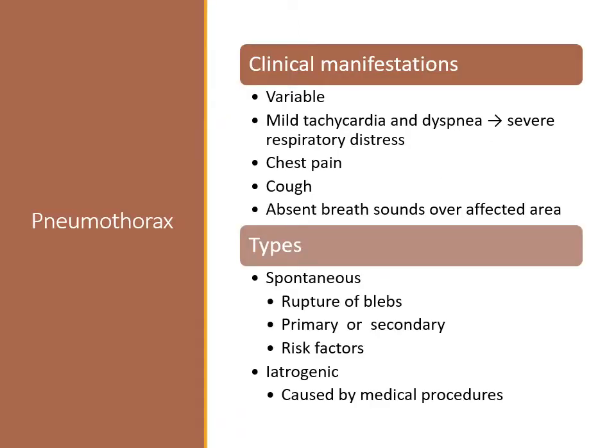If a pneumothorax is small, mild tachycardia and dyspnea may be the only manifestations. If the pneumothorax occupies a large area, respiratory distress may be present, including shallow rapid respiration, dyspnea, air hunger, and oxygen desaturation. Chest pain and a cough with or without hemoptysis may be present. On auscultation, there will be no breath sounds over the affected area. A chest x-ray shows the presence of air or fluid in the pleural space and a reduction of the lung volume.